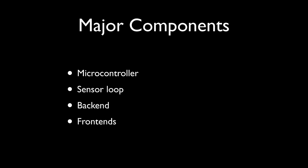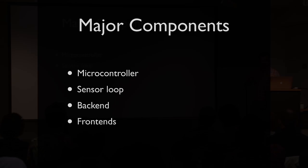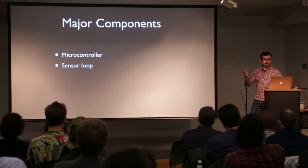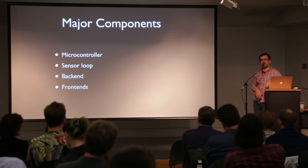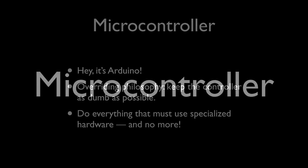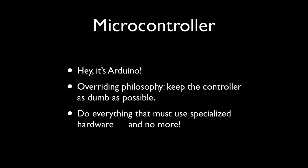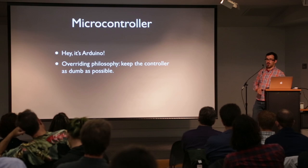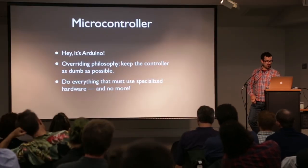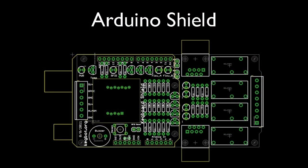The major components are: a microcontroller, a sensor loop whose job is to service those microcontrollers and report to the back end, the back end itself, and the front ends. Today the microcontroller is an Arduino — it's an AVR that uses the Arduino toolchain. The overarching philosophy is to keep the hardware very simple. One of my first jobs was writing device drivers in the kernel, and the main idea is: it's hard to debug a microcontroller, so put as little as possible there and do everything specialized that you must do in hardware.